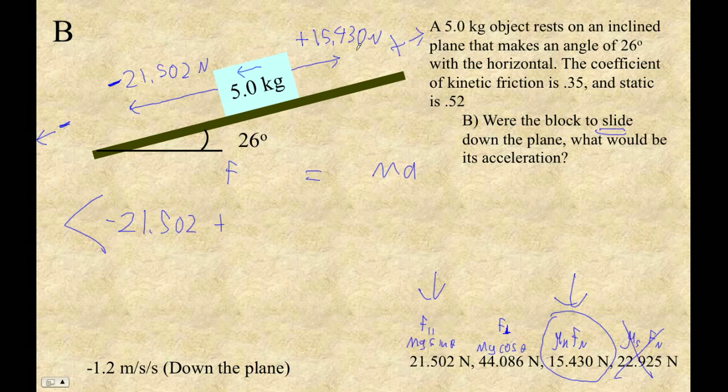So that equals, oh wait, hold on, plus 15.430 equals 5.0 times A, and now we can solve this for the unknown acceleration.